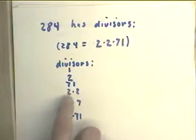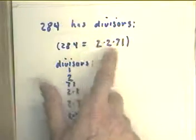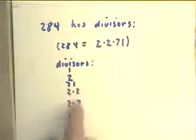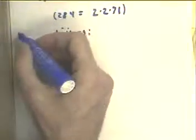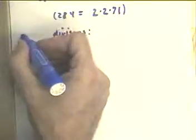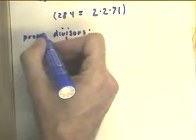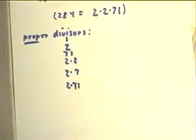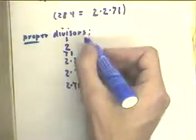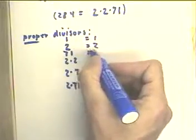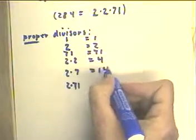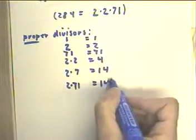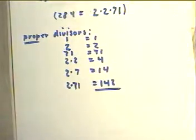Then two-factor divisors, you can have 2 times 2 or 2 times 71. Then, of course, you have 2 times 2 times 71, but let's just go ahead and list the proper divisors. So this is 1, this is 2, 71, 4, 14, 142.